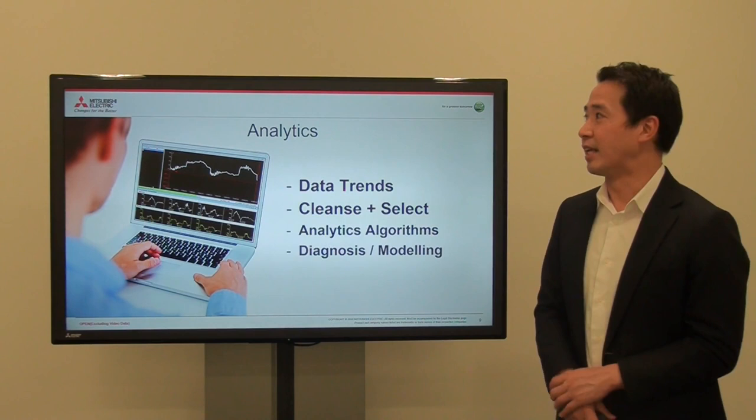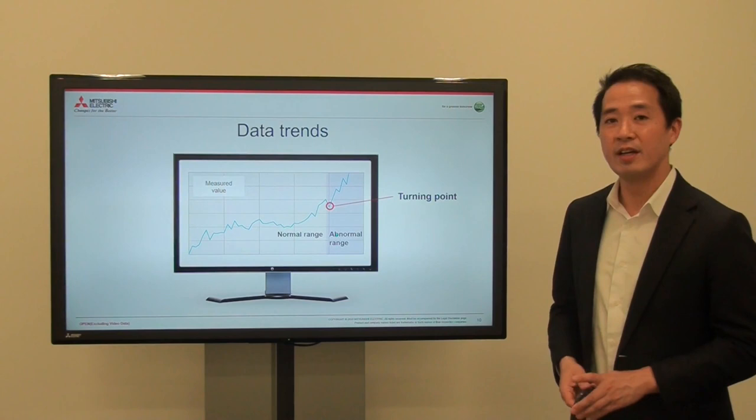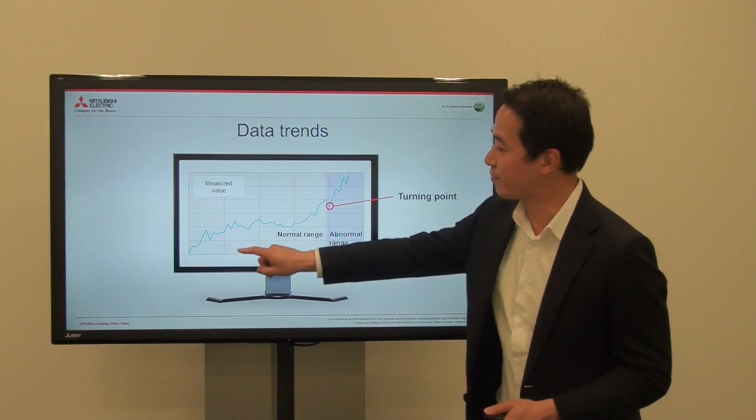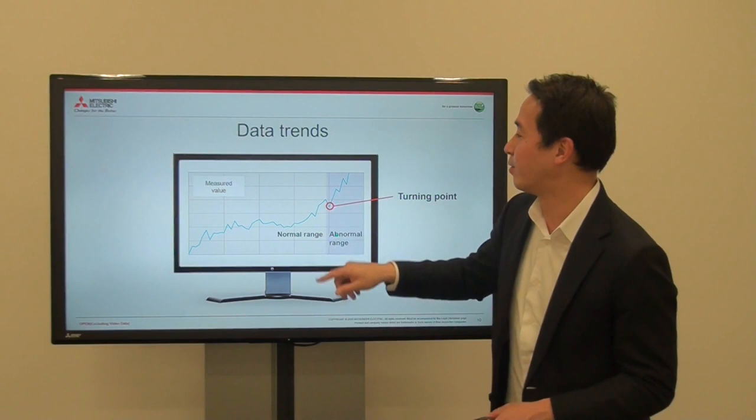Then we go to the data analytics phase, which basically involves data trends, cleansing and selecting, analytics and algorithms, and diagnostic modeling. At the end for the gear wear, your goal is to make a chart. The gear wear goes up over time as it wears down, and eventually it will become abnormal and break.